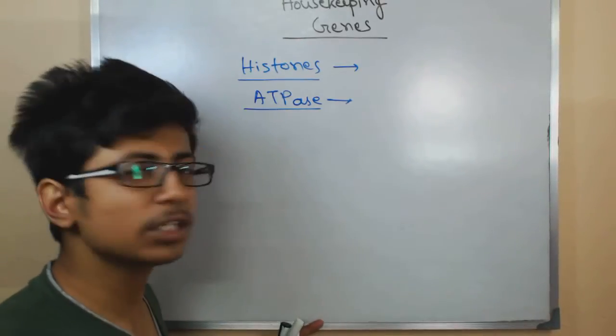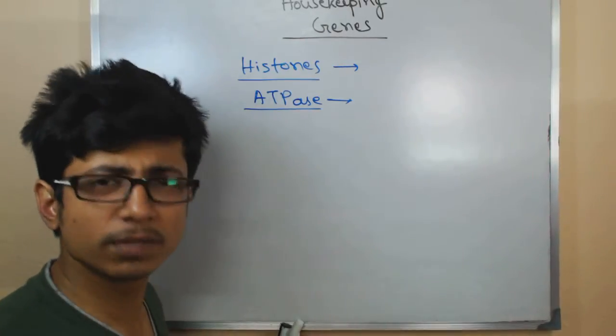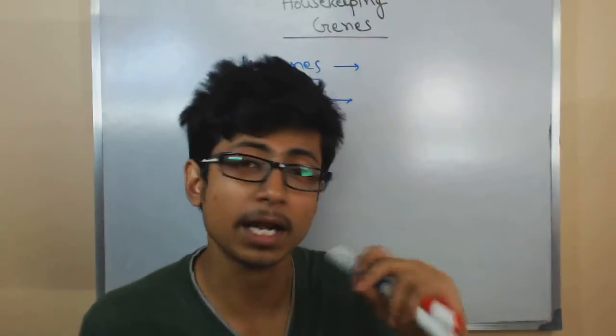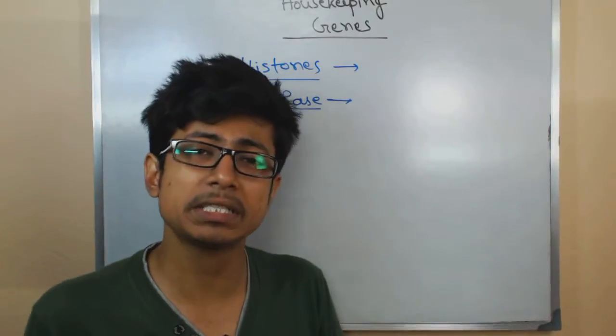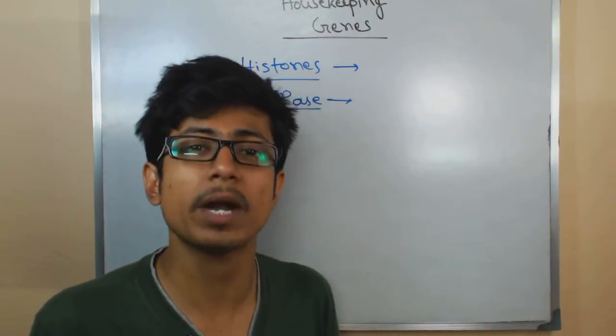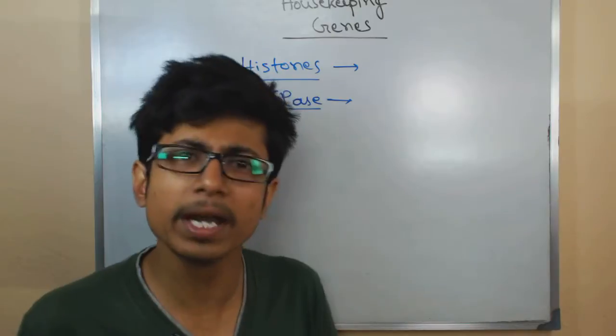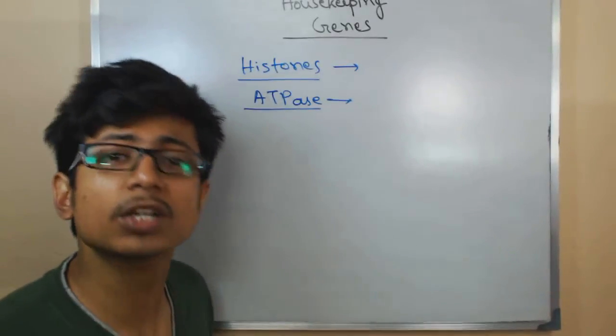The genes for metabolism—most of the metabolic pathways like amino acid metabolism, carbohydrate metabolism, the enzymes required in glycolysis—we always require those for surviving. So those genes are called housekeeping genes.